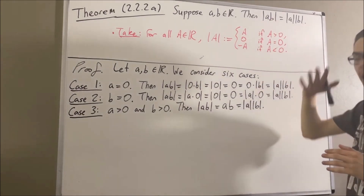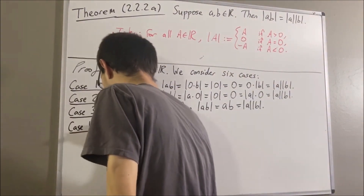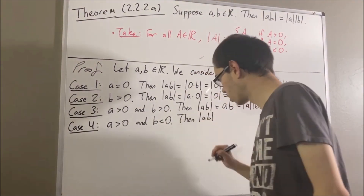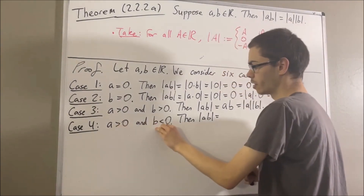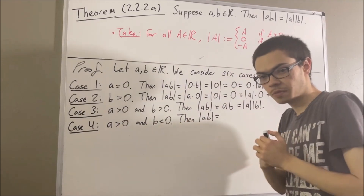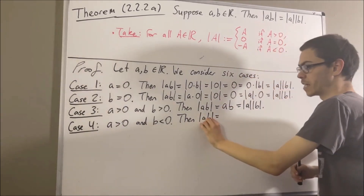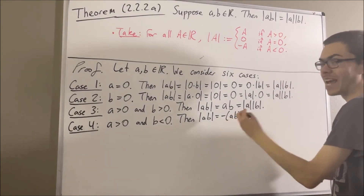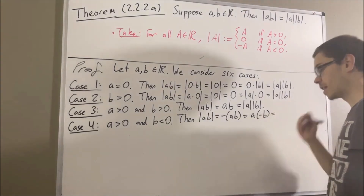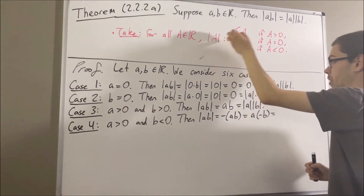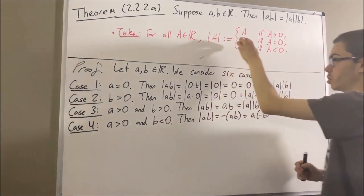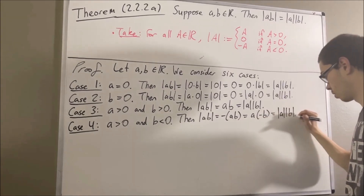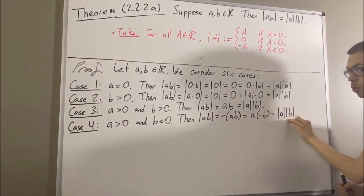Now let's move on to the next case, where A is greater than zero and B is less than zero. Again, we're going to establish a chain of equalities showing that these two are equal. Since A is greater than zero and B is less than zero, this implies A times B is less than zero. So by definition of absolute value, the absolute value of A times B is equal to the negative of A times B. But the negative of A times B is the same thing as A times the negative of B. Applying the definition of absolute value, since A is greater than zero the absolute value of A is equal to A, and since B is less than zero the absolute value of B is equal to the negative of B. So we can replace the A here with absolute value of A and replace the negative B here with absolute value of B.